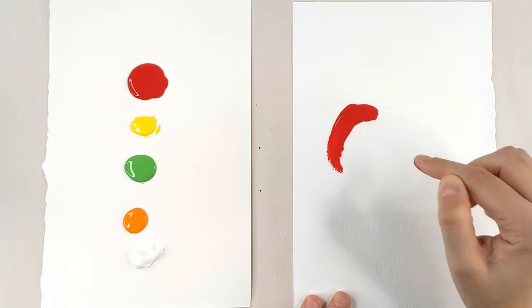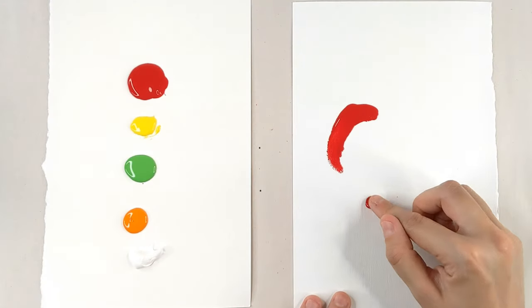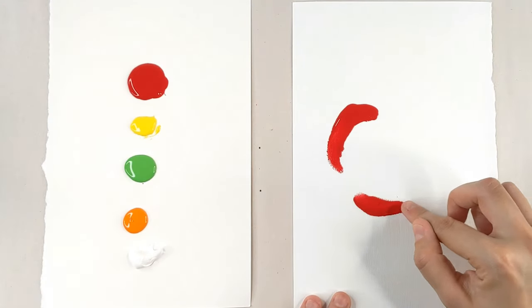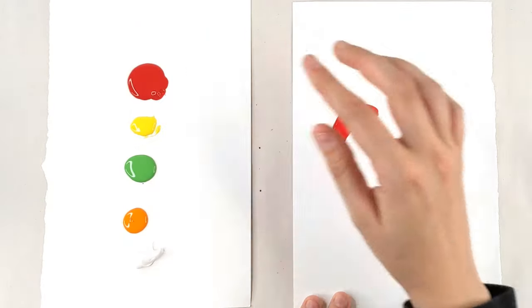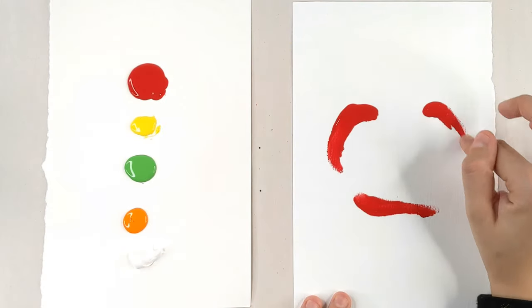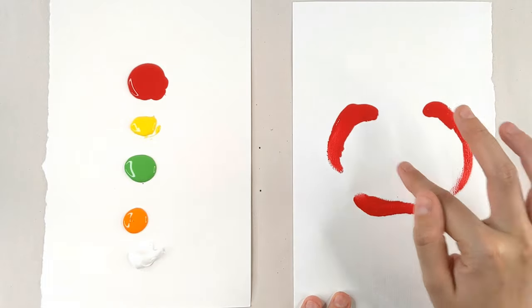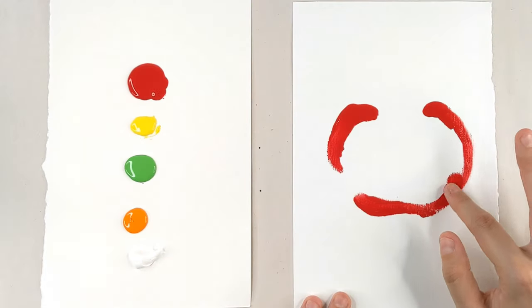So we're going to start off with our red and we're going to kind of make a big ball shape, but I'm going to make it a little flat down here. An apple is kind of like a ball that has a flat bottom, especially if we're going to make it.